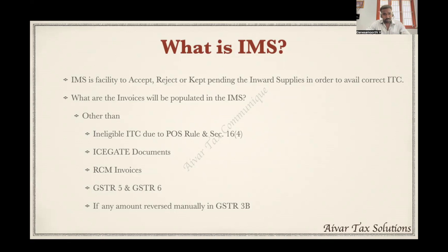ICEGATE documents such as bill of entry will not auto-populate in IMS — we cannot take any action against those. RCM invoices — inward supplies where we pay tax under reverse charge mechanism — will not auto-populate in IMS. Documents filed through GSTR-5 and GSTR-6 will not auto-populate in IMS. Any amount reversed manually in GSTR-3B will also not be auto-populated. Other than these five categories, all other inward supplies will be auto-populated in IMS.